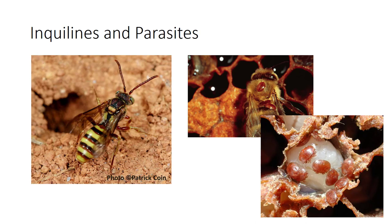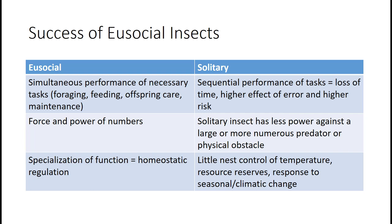Varroa mites feed externally on honey bee brood, causing deformation and death of bees. Social insects are highly successful. Three qualities contribute to their competitive advantage. First, the tasks of foraging, feeding the queen, caring for offspring, and maintenance of the nest can be performed simultaneously by different groups rather than sequentially, as in solitary insects. Performing tasks at the same time means that one activity does not jeopardize another, and the nest is not vulnerable to predators and parasites while foraging. Also, individual errors have little or no consequences in parallel operations compared to one after another.